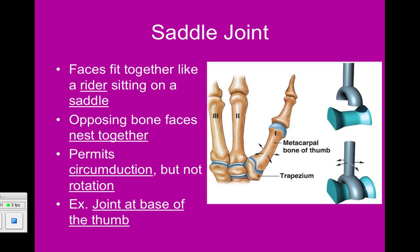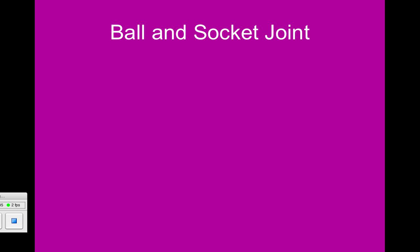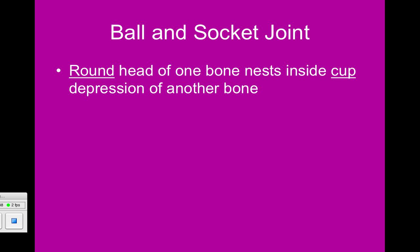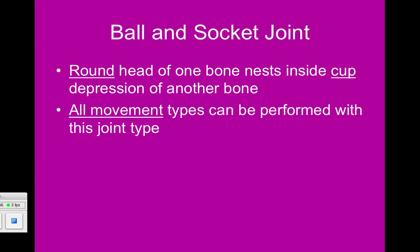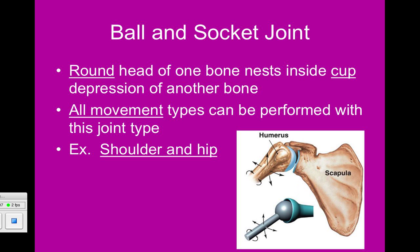The last classification of joints is the ball and socket joint. Basically, the round head of one bone nests inside a cup depression in another bone, like the rotator cuff. All movement types — abduction, adduction, flexion, extension, circumduction, and rotation — can take place with a ball and socket joint. The two main examples are the shoulder and the hip.